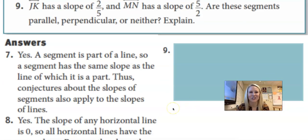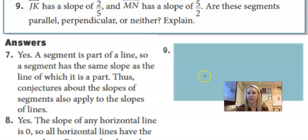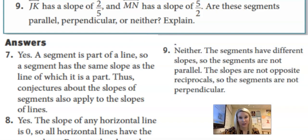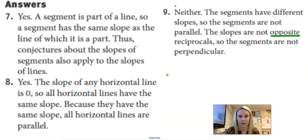And last but not least, JK. JK has a slope of two-fifths. MN has a slope of five-halves. Are these parallel, perpendicular, or neither? And I hope I didn't trick you on this, but it is neither. Okay? You would need one of them to be a negative number. So they're reciprocals, but they need to be an opposite reciprocal. So if that had a negative number, it would totally be perpendicular. Alright. Let me know if you have any questions on seven, eight, or nine. That's a math joke. Seven, eight, nine.